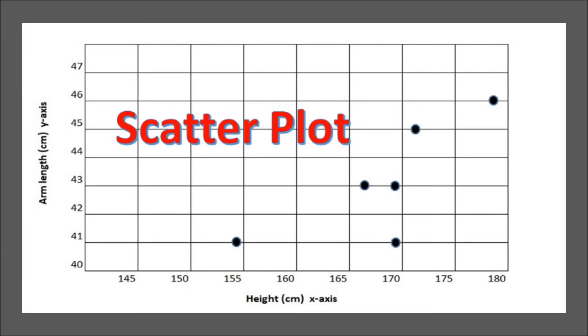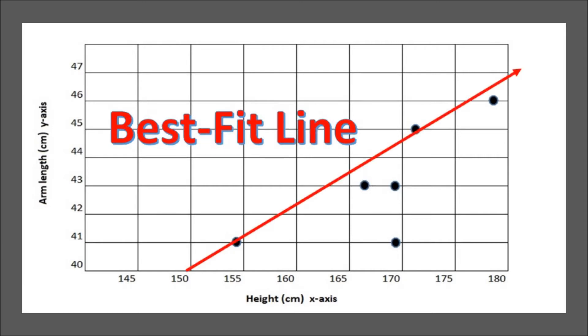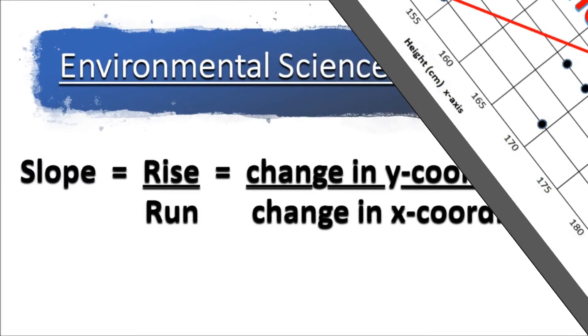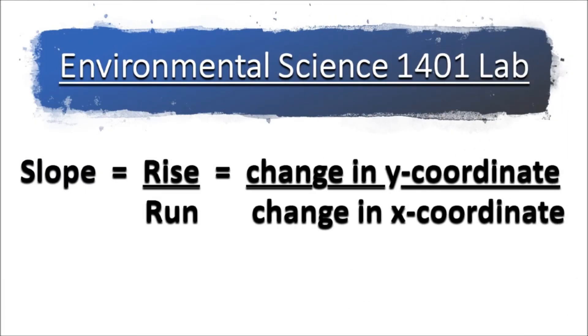To graph these, we use a best fit line where we try to get the line as close to the data points as possible. It's not going to be perfect. The way we find out how the data is related, since it's not in a line, is to find the slope of that data.